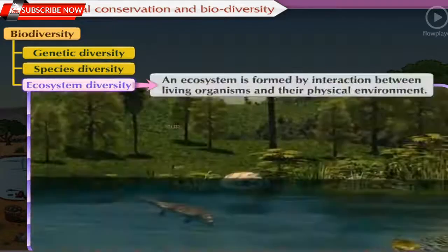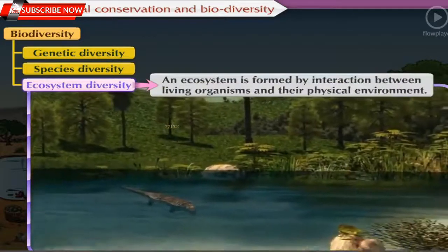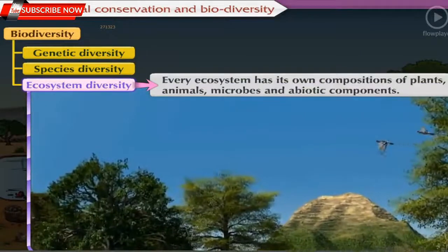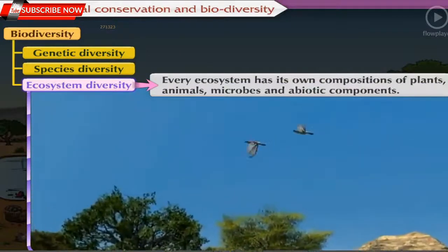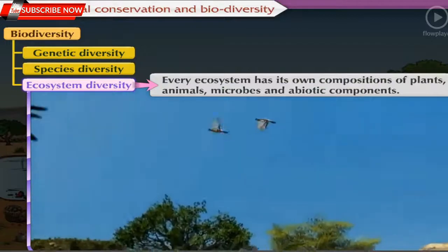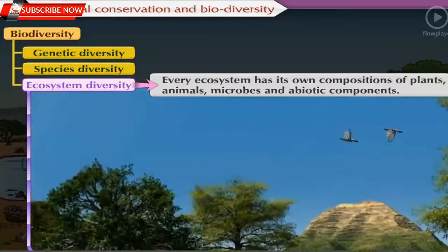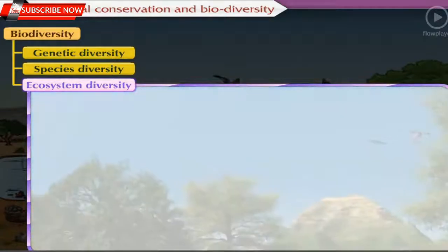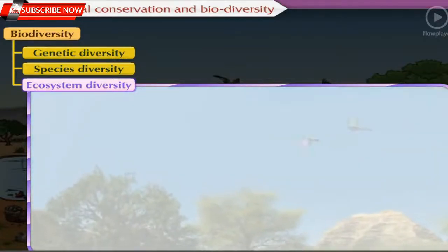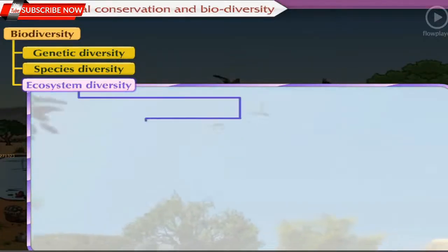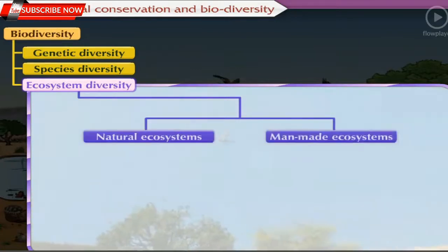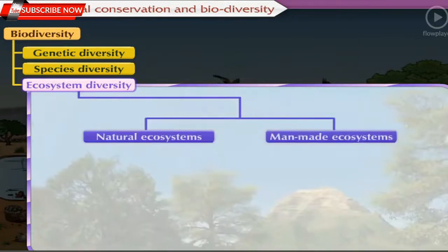An ecosystem is formed by interaction between living organisms and their physical environment. Every ecosystem has its own composition of plants, animals, microbes, and abiotic components. We can broadly distinguish ecosystems into two main types: natural ecosystems and artificial or man-made ecosystems.